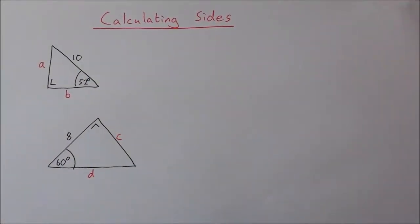Okay, in this video we're going to look at calculating sides in right angle triangles using sine, cosine, and tan. I have two examples here and we're going to find the size of the unknown sides in both triangles.